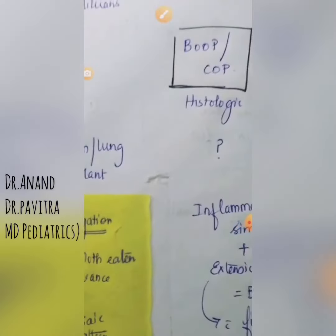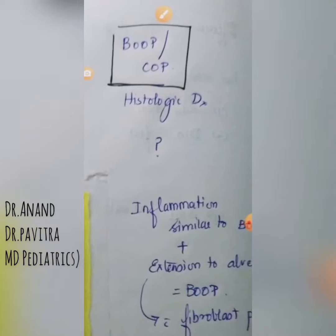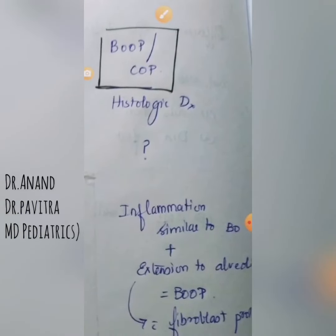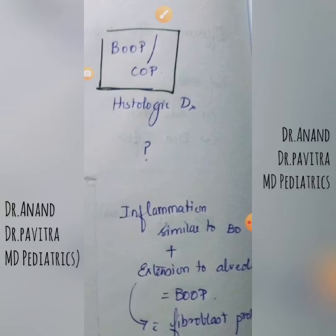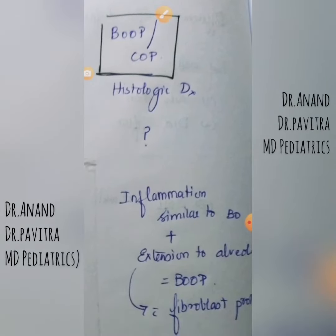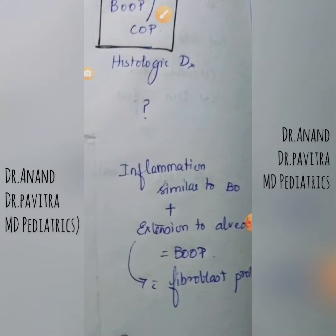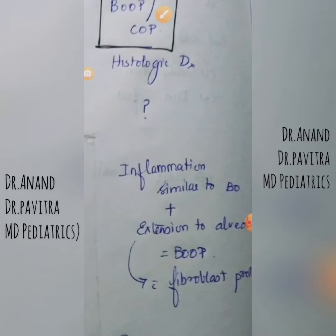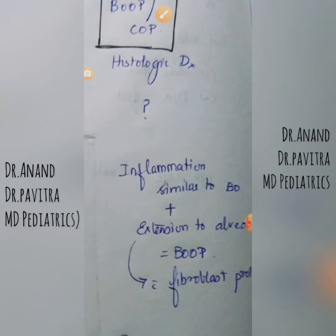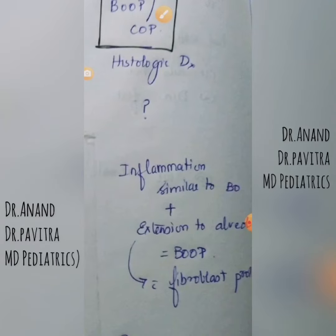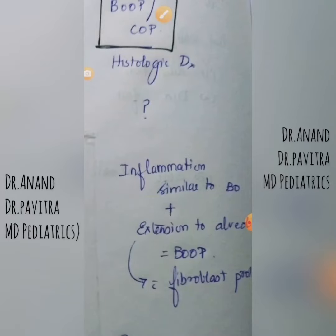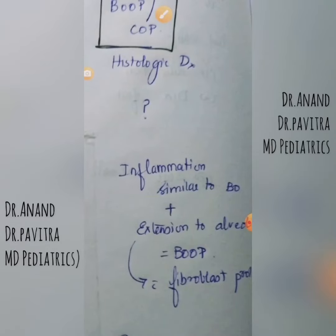Bronchiolitis obliterans organizing pneumonia, or cryptogenic organizing pneumonia, is also a histologic diagnosis. The difference is that apart from alveolar ducts, the alveoli are also involved — that means parenchymal involvement by fibroblast proliferation. Pneumonia means parenchymal involvement, so alveoli are also involved. Both are histologic diagnoses; the difference is in the areas of involvement.